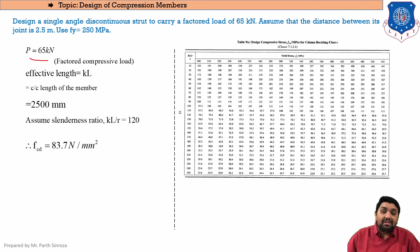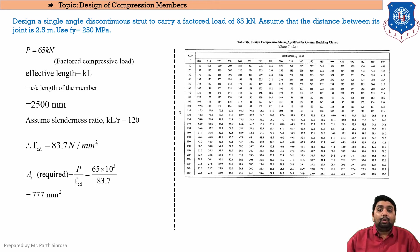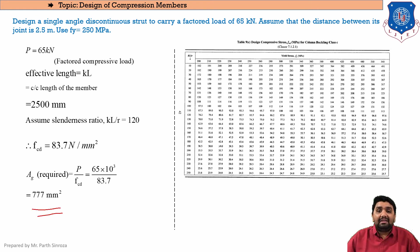Now we find the required cross-sectional area to sustain the load. Using the basic equation stress σ = P/A, rearranged as A = P/fcd: required area = 65,000 / 83.7 = 777 mm². We now need to select an angle section from the steel table whose cross-sectional area is greater than 777 mm².